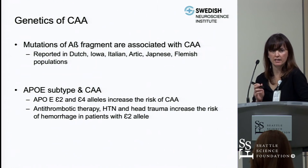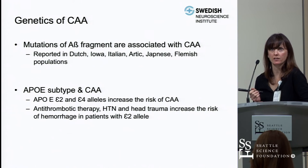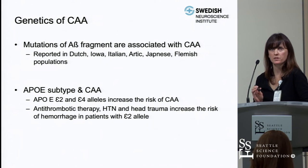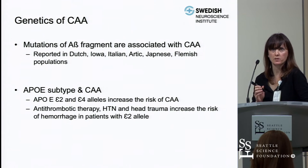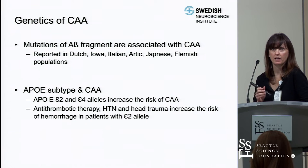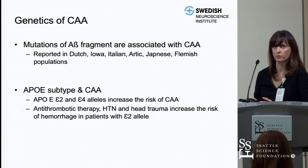Mutations associated with cerebral amyloid angiopathy amyloid beta fragments have been reported in Dutch, Iowa, Italian, Arctic, Japanese, and Flemish populations. ApoE Epsilon 2 and 4 alleles are associated with higher risk of cerebral amyloid angiopathy. Antithrombotic therapy, high blood pressure, and head trauma increase the risk of hemorrhage in patients with the Epsilon 2 allele.